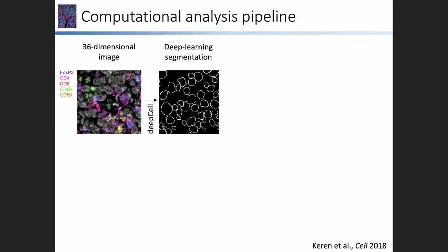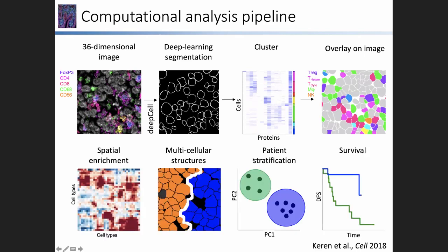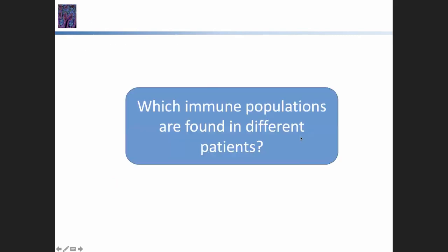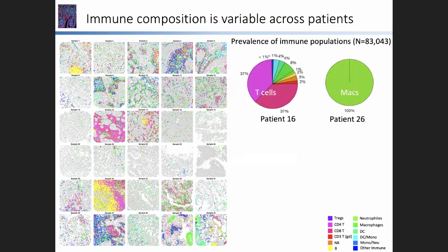After cells are segmented in the image, we can cluster the different cells, overlay them on the image, and ask very interesting questions about how these cells are organized in the tissue — what are the multicellular structures, how does it look in different patients, and how does it relate to clinical attributes such as patient survival. We started by asking which immune populations are found in different patients. Here you can see all 41 patients; tumor cells are colored gray and different immune cells in different colors.